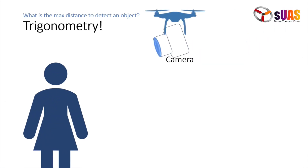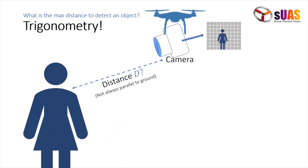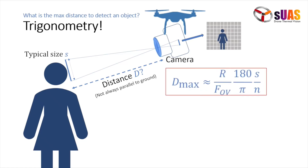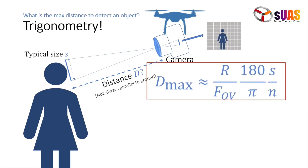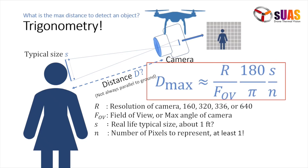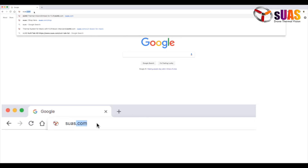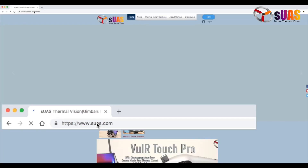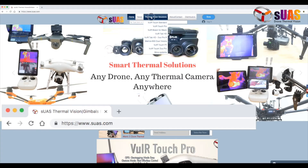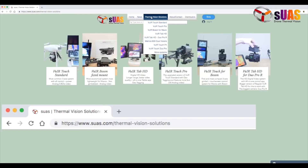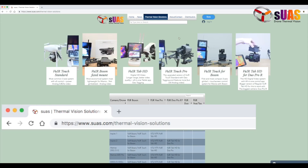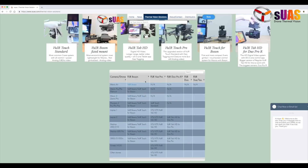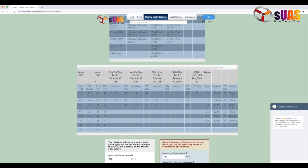We have worked it out for you using trigonometry and come up with a brief, simple, straightforward formula. If you need a calculator, we have published it on our website. Please go to sues.com, click on Thermo Solution, and then go to the bottom of the page.